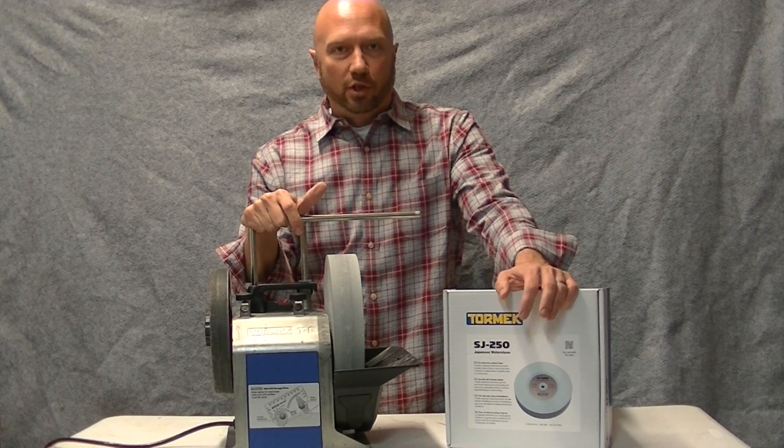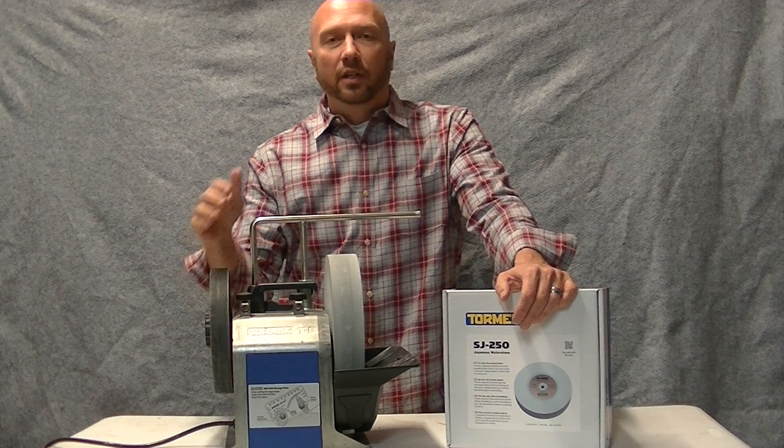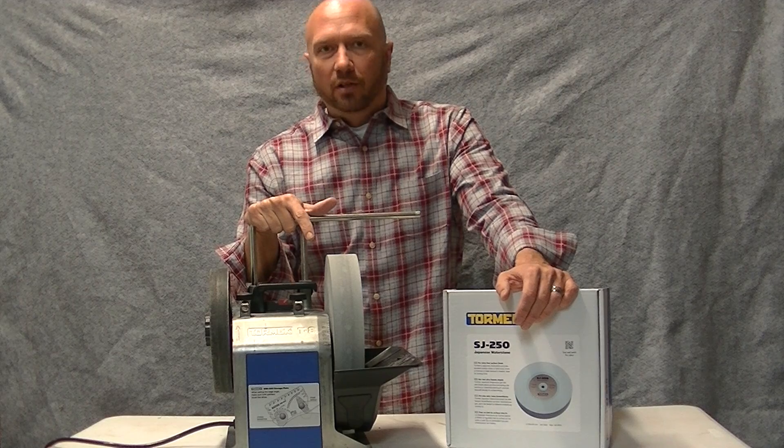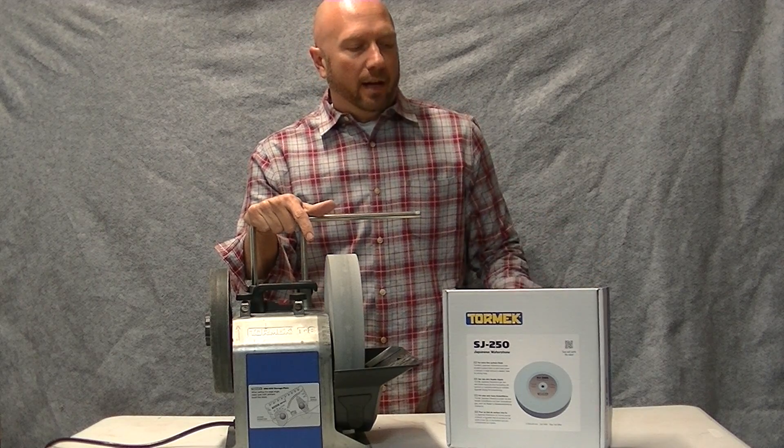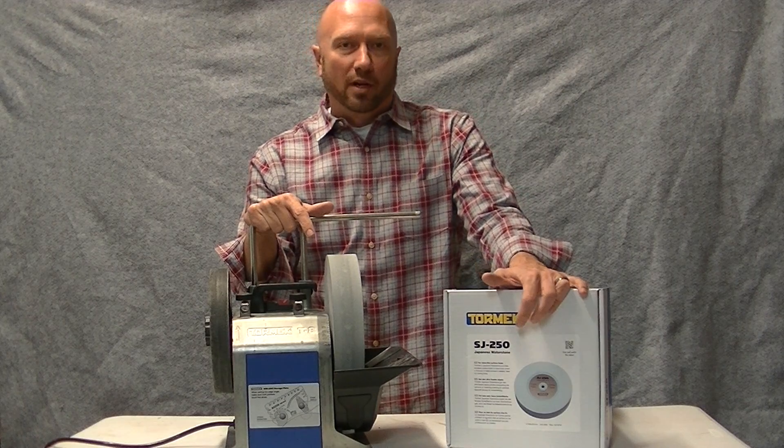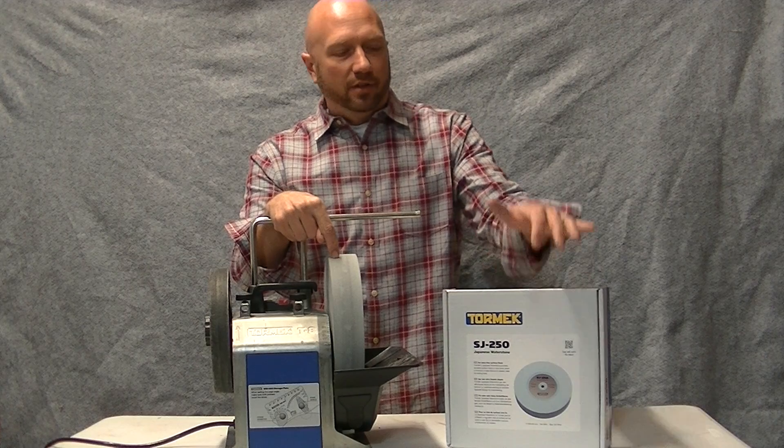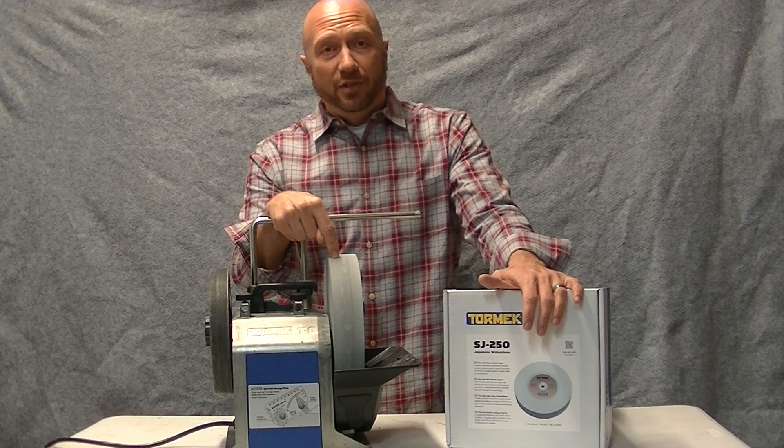You can sharpen chisels, you can sharpen axes. I mean, you can sharpen all kinds of stuff. With this leather wheel, you can put an amazing mirror finish on your blades and I'm taking it up a notch with the 4,000 grit Japanese water stone. So we're going to switch out the regular stone. That's a thousand grit for the 4,000 grit.